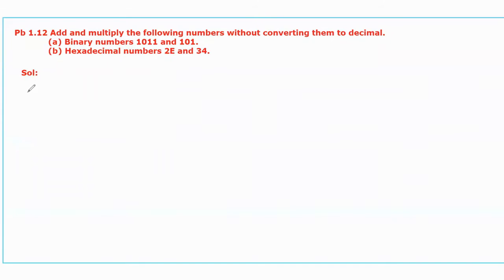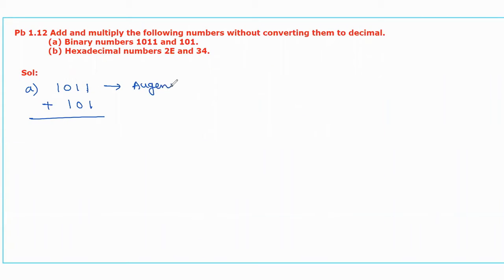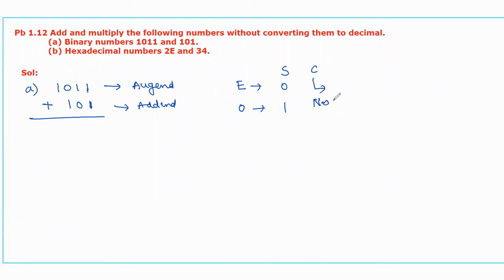Now the addition for the first part is the binary addition: 1011 plus 101. We should add these two binary numbers starting from LSB. The first number is named the augend and the second number is the addend. When we add an even number of 1s, the sum will be 0. If we add an odd number of 1s, the sum will be 1, and the number of carries depends on the number of pairs of 1s in the addition.